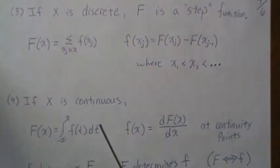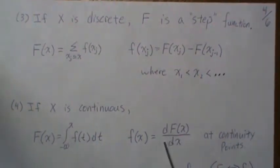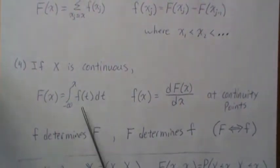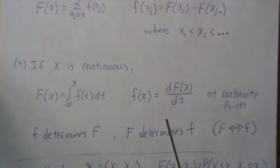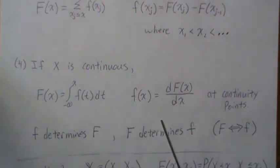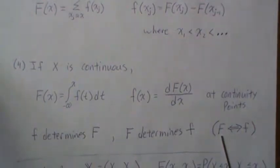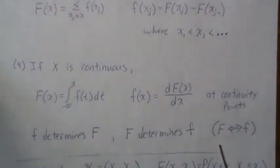If X is continuous, we can derive the CDF from the PDF by integration, and also derive the PDF from the CDF by differentiation — though only at continuity points. This means the PDF determines the CDF and the CDF determines the PDF, establishing a one-to-one correspondence. This is only a heuristic argument, but the key point is: if you know the CDF, you know the PDF. This becomes important in variable transformations — if the CDF of a transformation equals the CDF of a known distribution, that implies it must have that corresponding PDF.